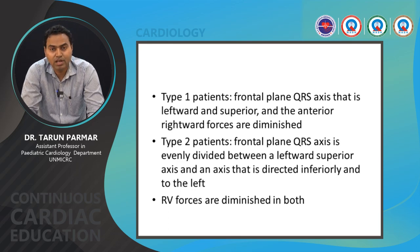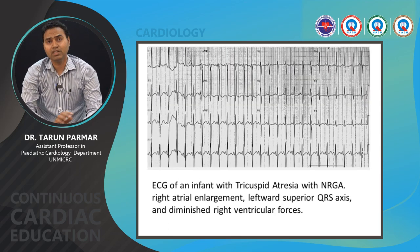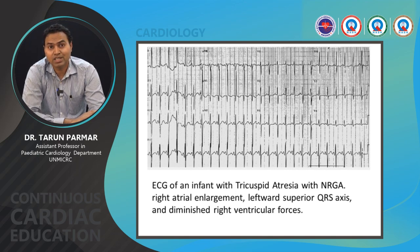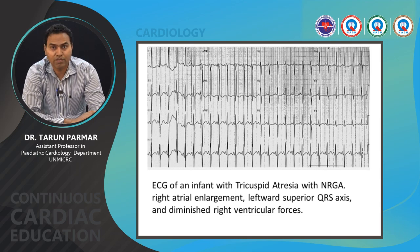This is an ECG of an infant with tricuspid atresia. You can see right atrial enlargement shown by tall P waves, a left and superior QRS axis, predominantly LV forces, and diminished RV forces.